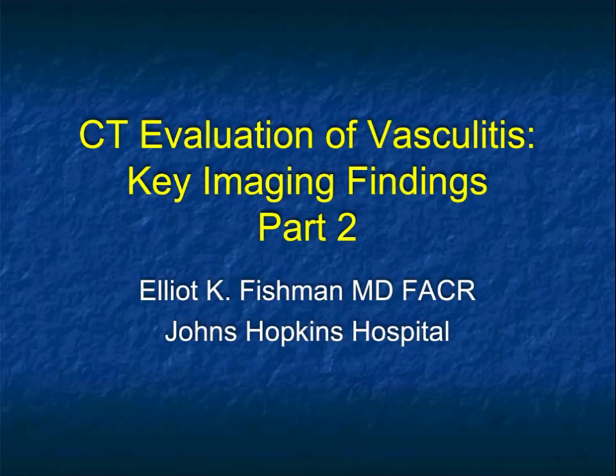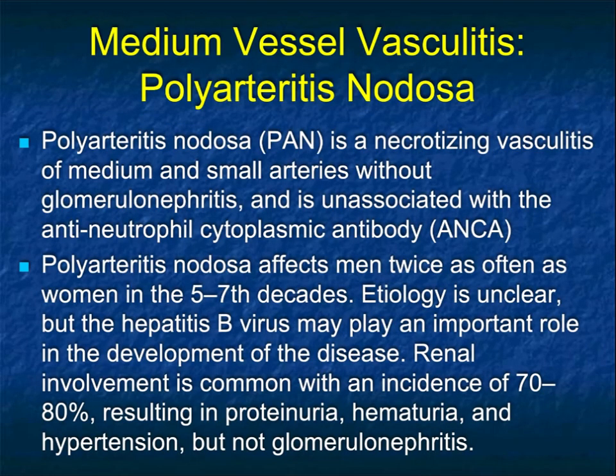Hi, this is Elliot Fishman, and welcome back to part two of CT evaluation of vasculitis. Remember last time we spoke about large vessel disease and a little bit about small vessel disease. We spoke about Kawasaki's disease. And now the other big category is polyarteritis nodosa, or PAN.